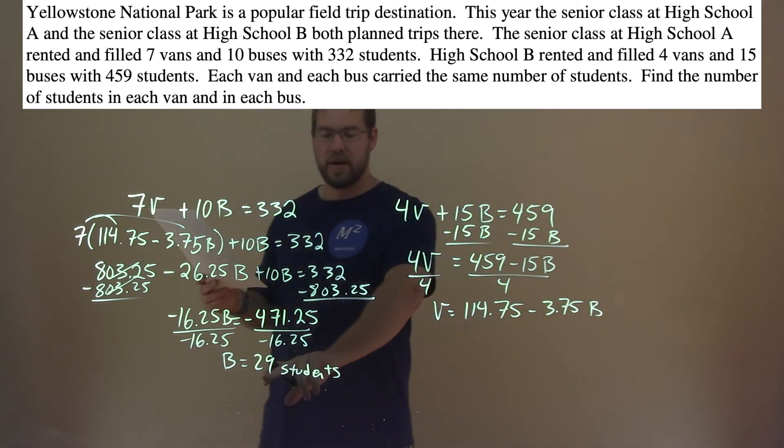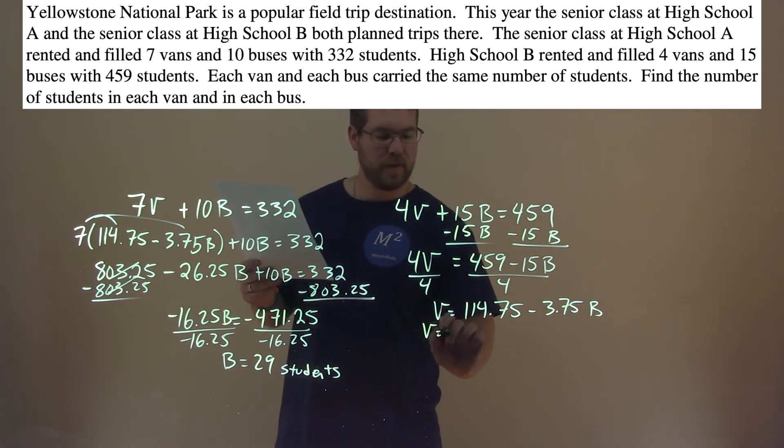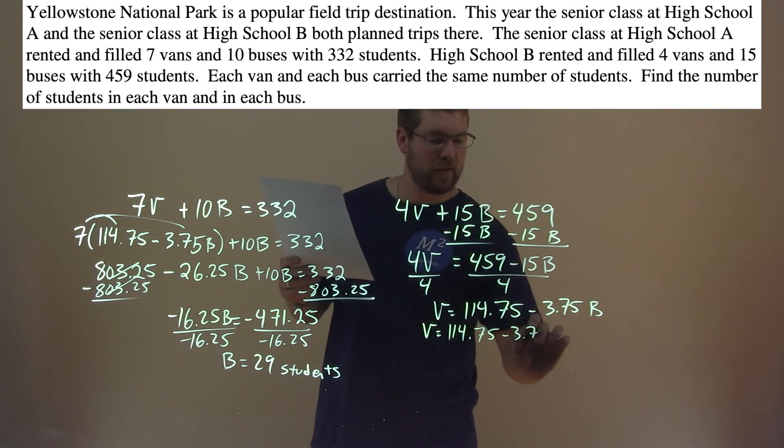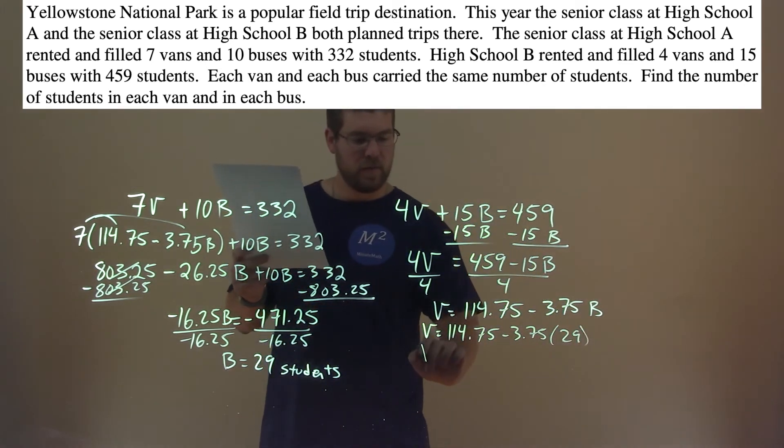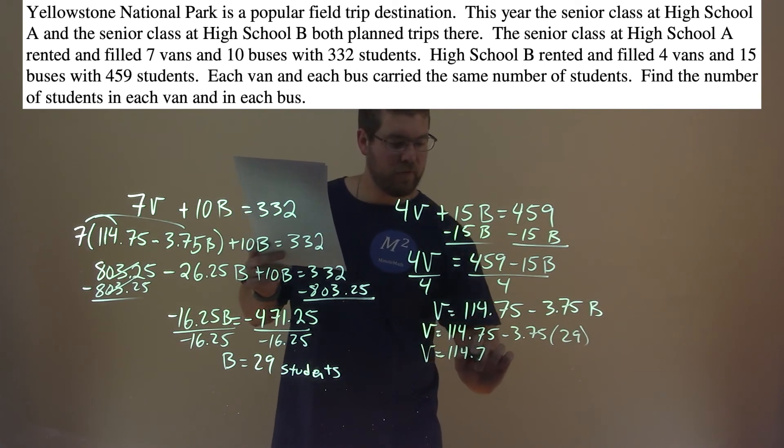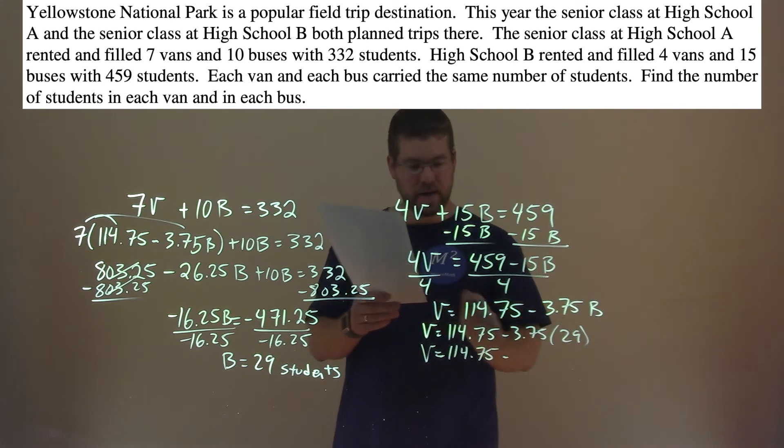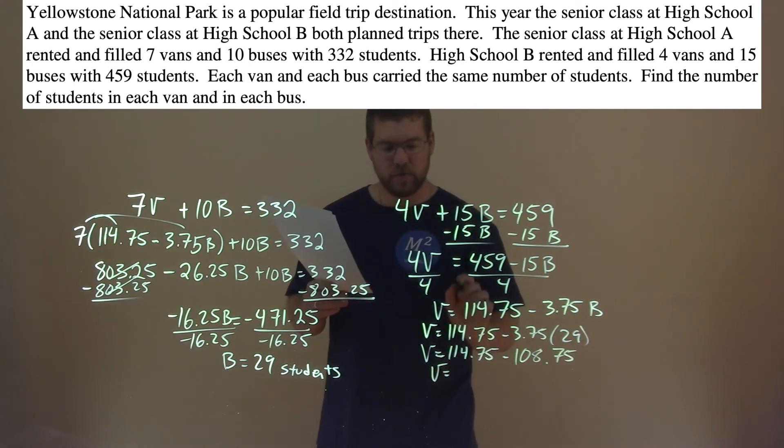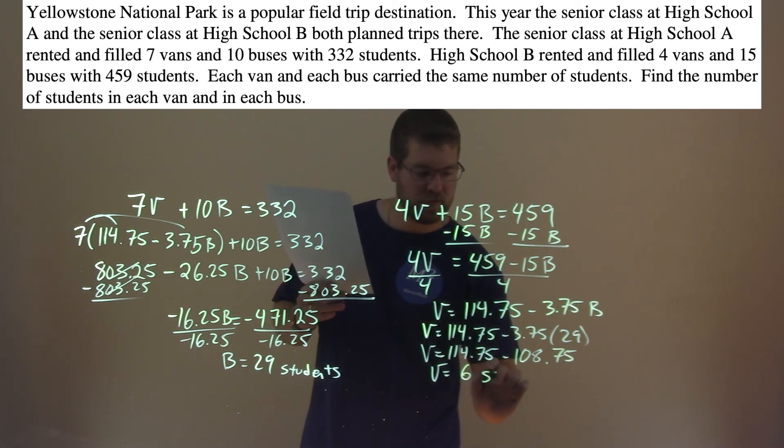To find the number of students for each van, we take that 29 and we're plugging it in for this b. So v equals 114.75 minus 3.75 times 29. Well, v equals 114.75 minus 108.75, which is 6. So 6 students.